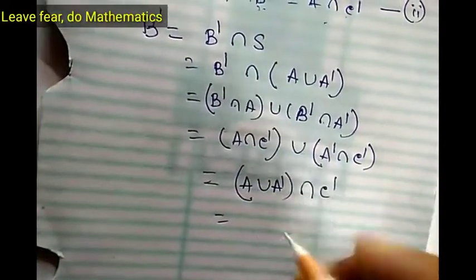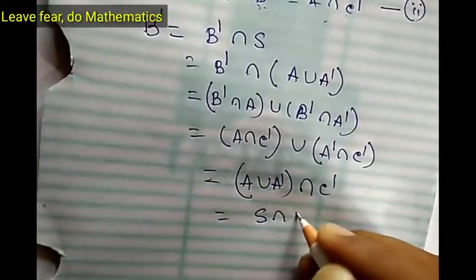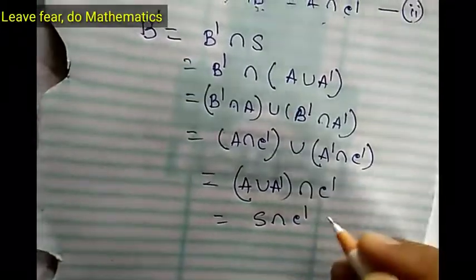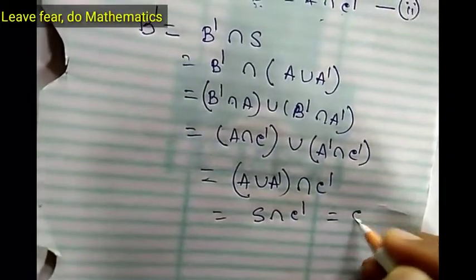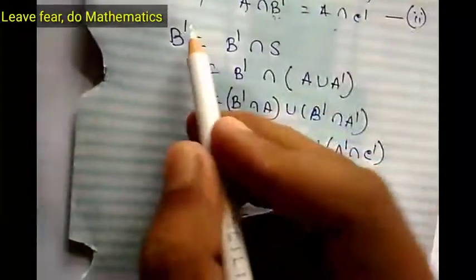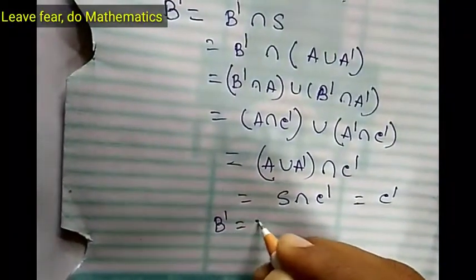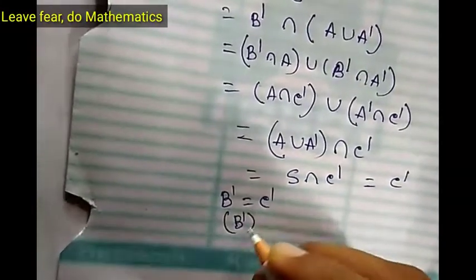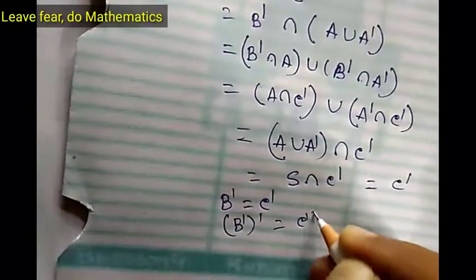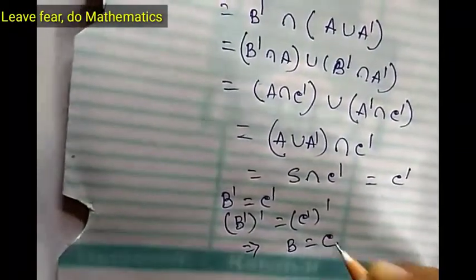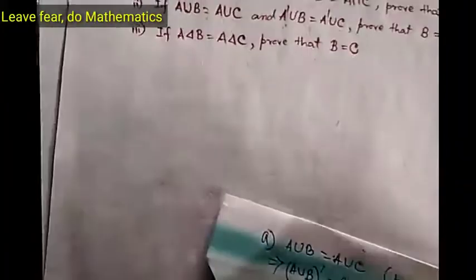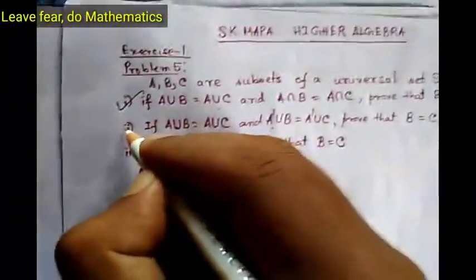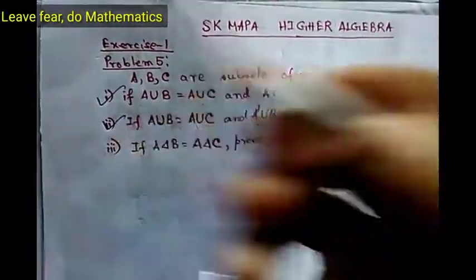What is A union A complement? This is S, so (A union A complement) intersection C complement equals C complement. So now we have B complement equals C complement. Take complement on both sides — this means B equals C. So we are now done; we have proved that B equals C. Problem 2 is also proved.